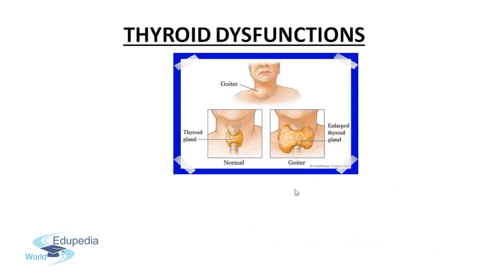The next problem is thyroid dysfunctioning. There is a gland in our body called the thyroid gland, which is a very important gland that influences most of the metabolic processes in our body. Any thyroid disorder can range from a very small, harmless problem — such as goiter, which is an enlarged thyroid gland near the neck area — and this kind of problem may need no treatment because it is not life-threatening.